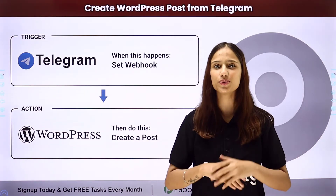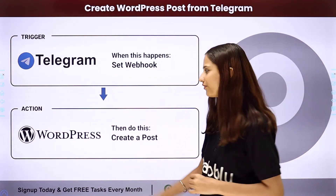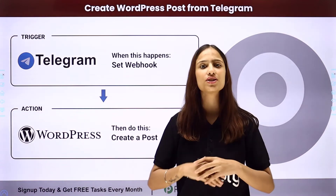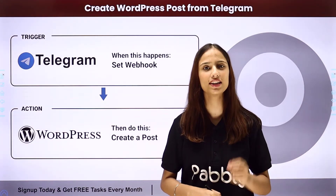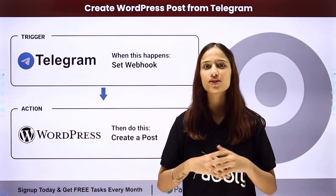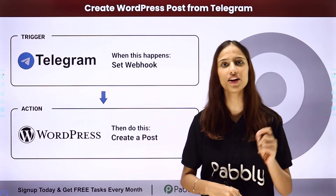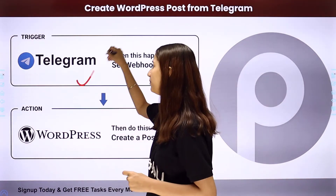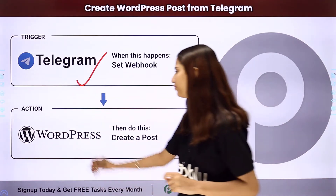To do this, you need to build an integration between these applications, for which you can use this amazing integration and automation software — Pabbly Connect. You just have to build a simple integration where the trigger application will be Telegram and your action application will be WordPress.